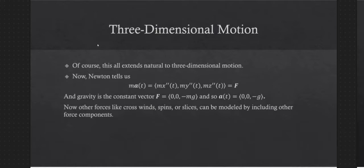Not many things change when we move to three dimensions in the presence of a gravitational field. We still have F equals ma — the sum of the forces should be mass times acceleration. In three dimensions that looks like m times the second derivative of x, second derivative of y, second derivative of z. We can think of z as my altitude, and then x and y as north, south, east, and west. So we'll have to decide on our axes.